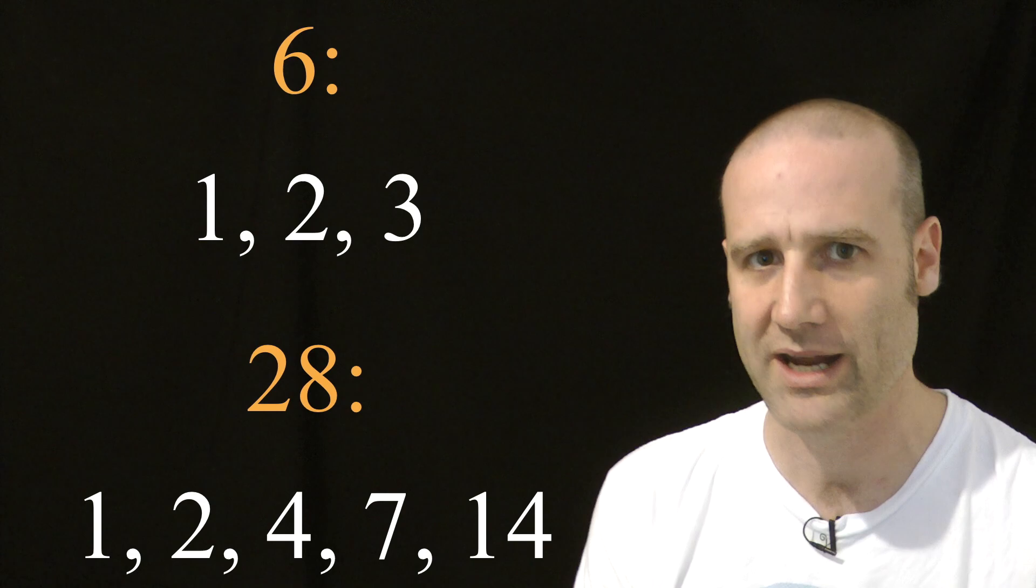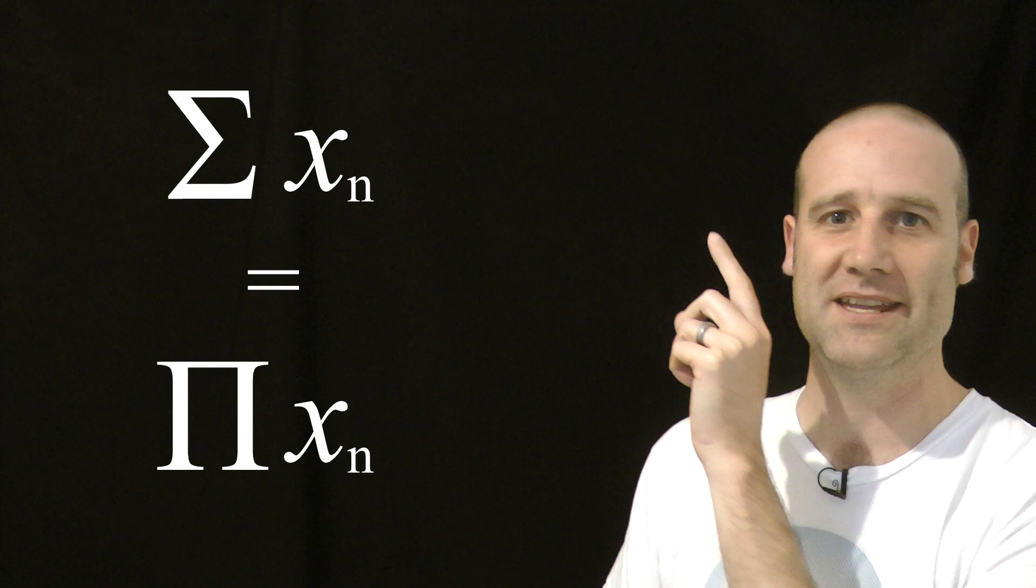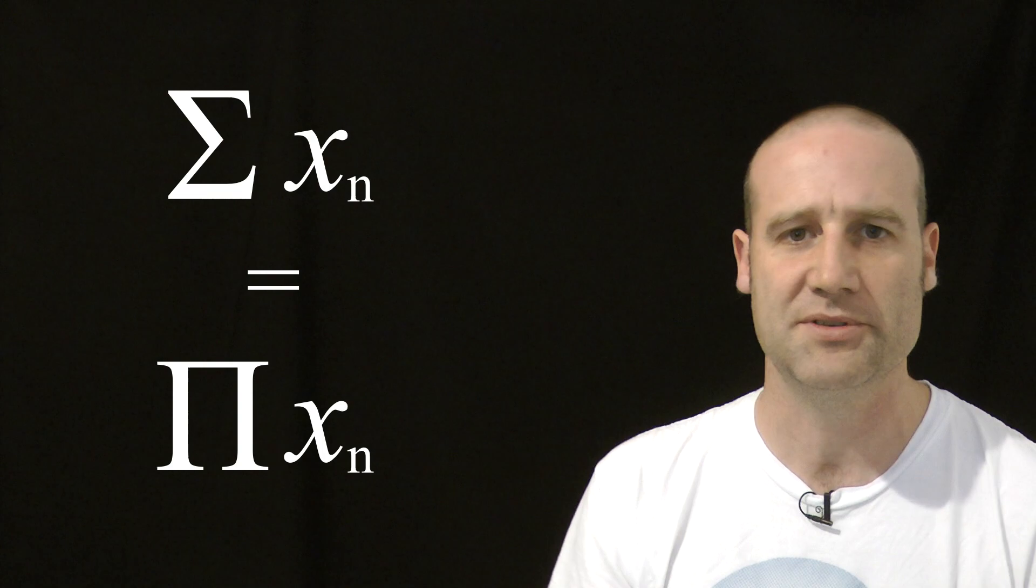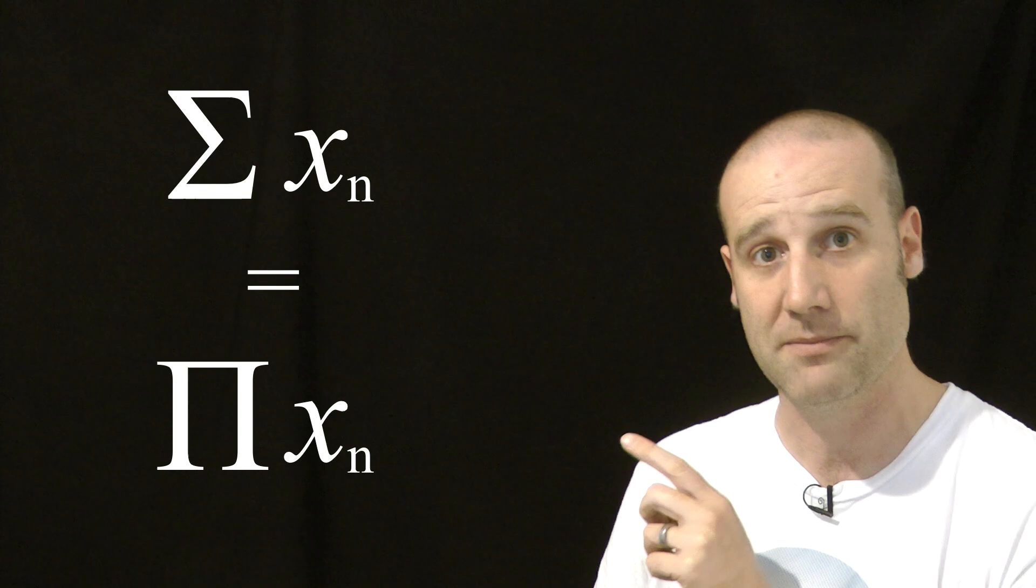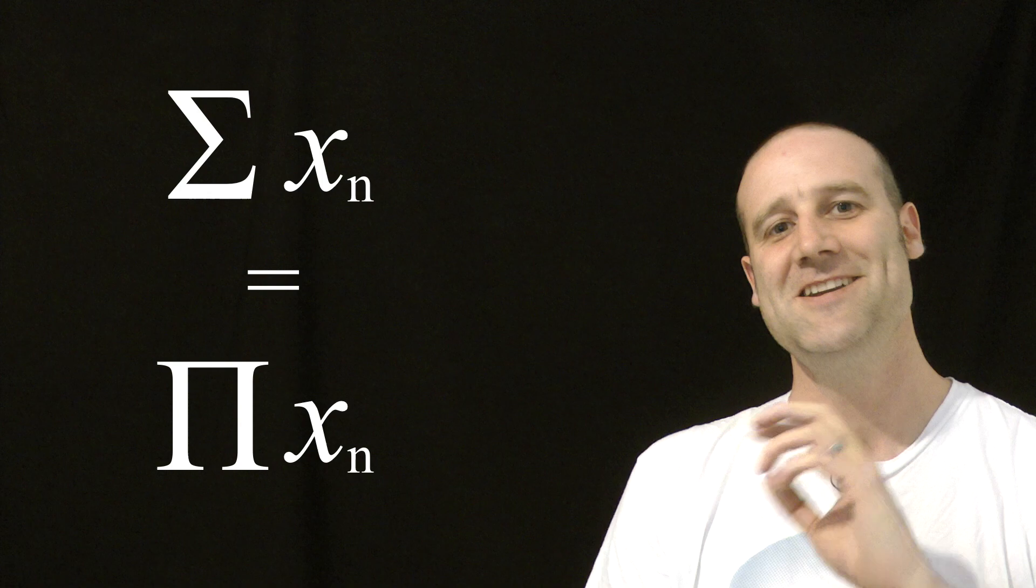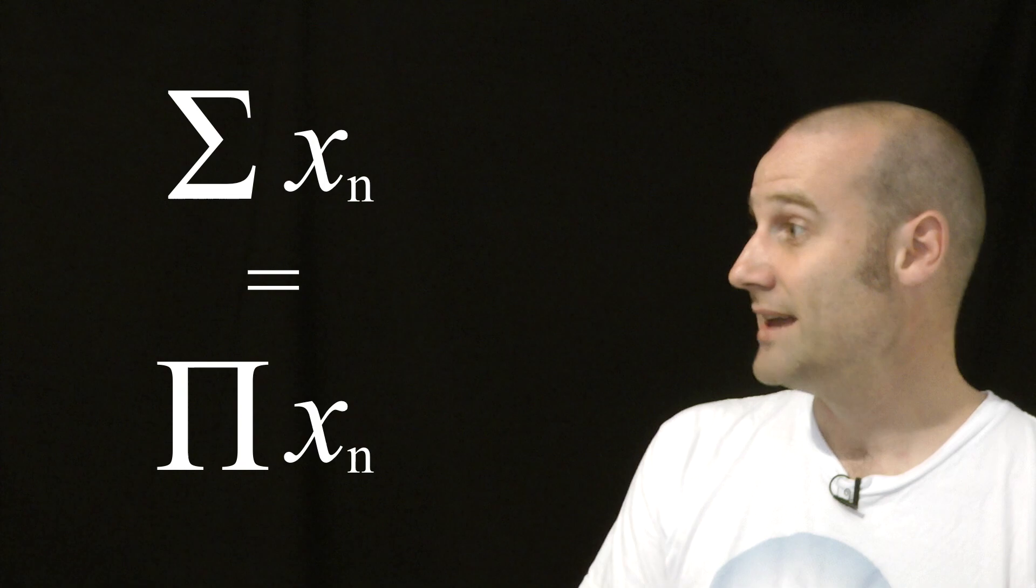What we're actually looking for are sets of numbers such that if you add all the numbers together, you get the same answer as when you multiply them all together. Capital Pi means you find the product. So if the sum of a set of numbers equals the product of that set, then you can get a log troll.